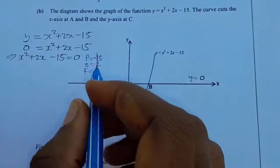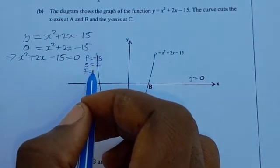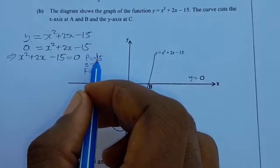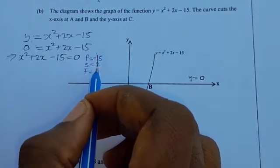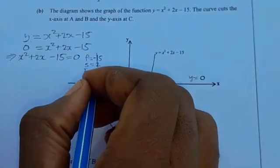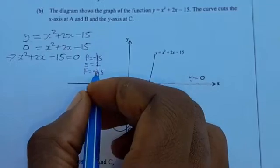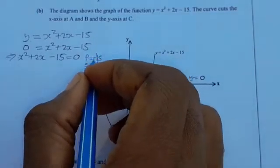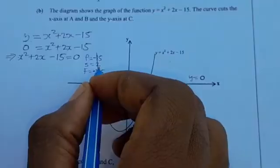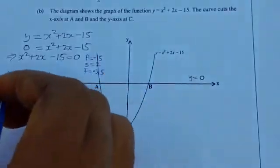We look for two factors of −15 such that their product is −15 and their sum is 2. Those factors are −3 and 5: −3 × 5 = −15, and −3 + 5 = 2. We'll use these factors in solving.